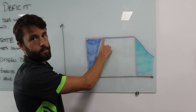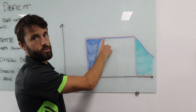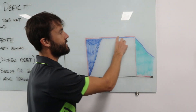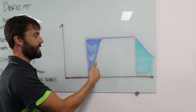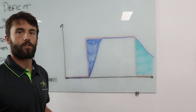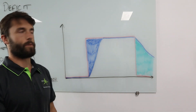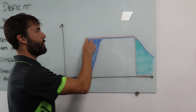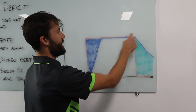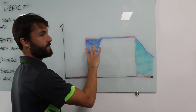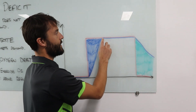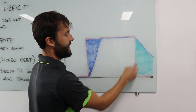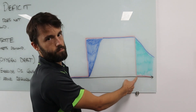Here we've reached a steady state — oxygen supply is meeting the demand for the rest of this period. This might be a one kilometre run where we just run at a steady pace. We go through a deficit when we increase the intensity, we reach a steady state, and then this is the end of the activity.